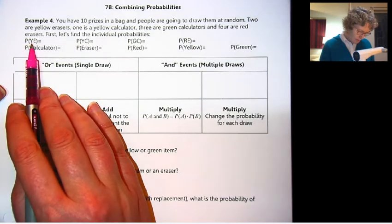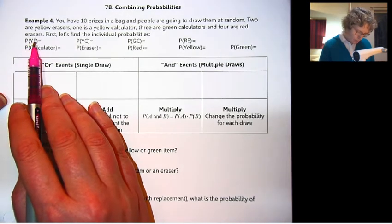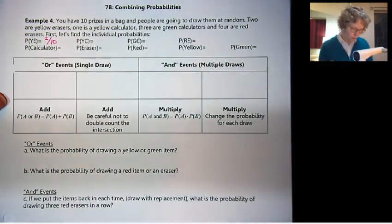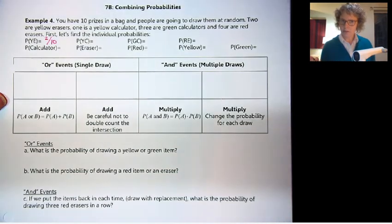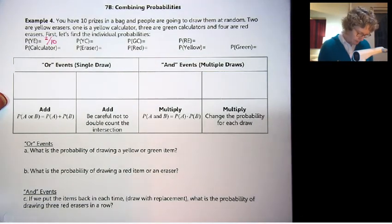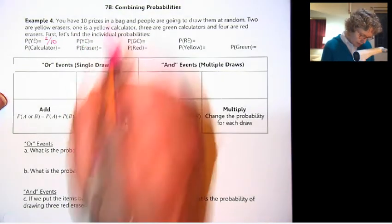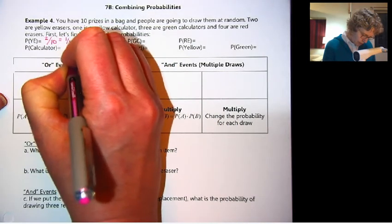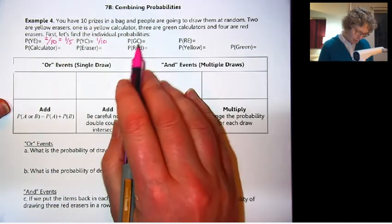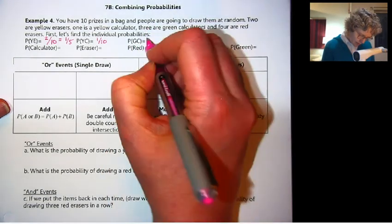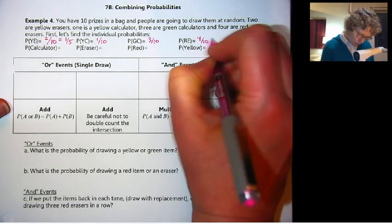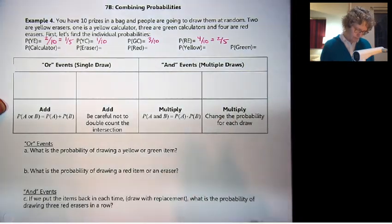First, let's find the individual probabilities of each one. So I'm using the first letter, YE means yellow eraser. So we have two yellow erasers out of 10. This is good practice for our individual probabilities. Yellow calculator, we have 1 out of 10.